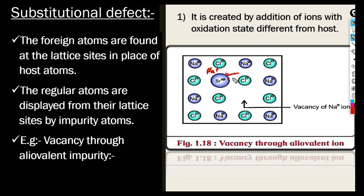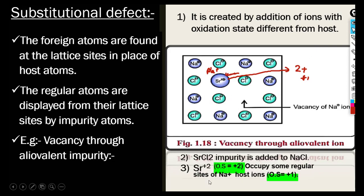For vacancy through aliovalent impurity: first, Sr has a 2+ oxidation state and Na has a 1+ oxidation state, so they have different oxidation states. When SrCl₂ impurity is added to NaCl, Sr²⁺ occupies regular sites of Na⁺ host ions. For each Sr²⁺ substituting one Na⁺, one cation vacancy is created. Write these three to four points along with the diagram — this question is for four marks.